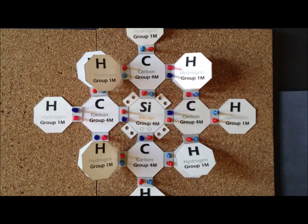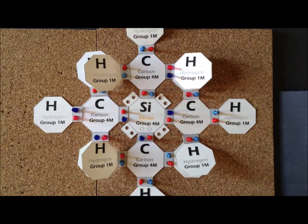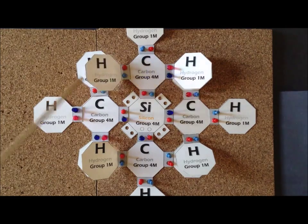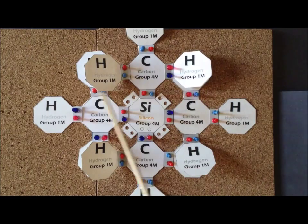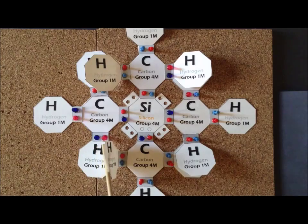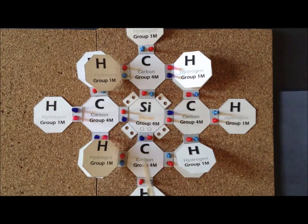Each carbon atom contributes four valence electrons, the silicon atom contributes four valence electrons, and each hydrogen contributes one, giving a total of 32 valence electrons to allocate. One particular challenge in drawing the Lewis structure for this compound — even though all bonding is single bonds — is that the hydrogen atoms start to get in each other's way. We can fold back some of the hydrogens so we can see all of them simultaneously and identify which hydrogen belongs to which carbon to form the four methyl groups attached to the central silicon atom.